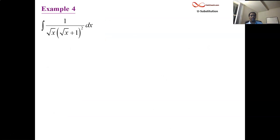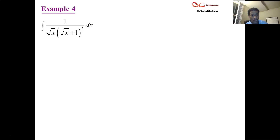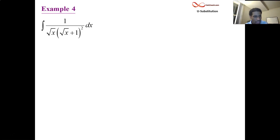Let's go ahead and do Example 4, a little more ominous than the last one: 1 over root x, times the quantity root x plus 1, which is squared. What are you looking for? An inside function — with the goal that the inside function's derivative is the outside function, or some multiple of it. There's really only one thing you can call the inside function here: it is root x plus 1, and that whole thing is squared. So that's going to be the inside function.